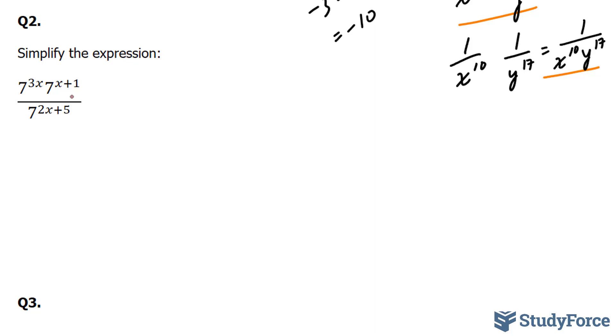Let's start off with the top. You'll notice that the bases are the same. And because the bases are the same, and because these two are being multiplied, you will be adding the exponents. So in our case, we have 3x, which is the exponent of this part, plus this part, x plus 1.